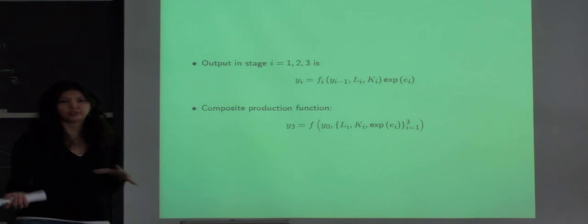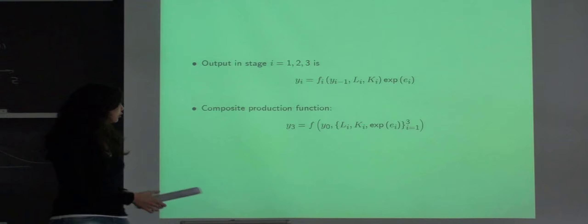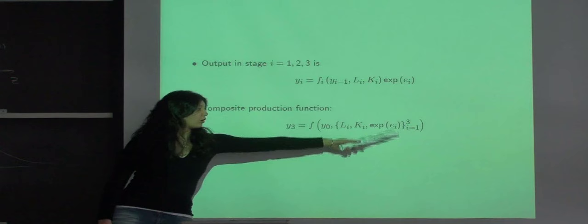And then if we substitute in recursion for intermediate output levels, we get a composite production function which describes final yields as a function of inputs and shocks throughout all three production stages and initial conditions.